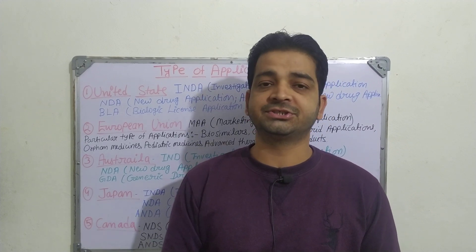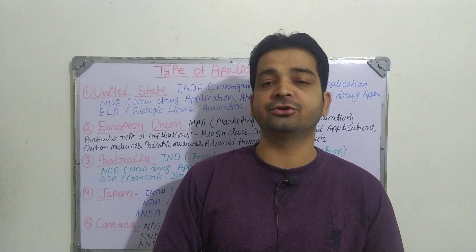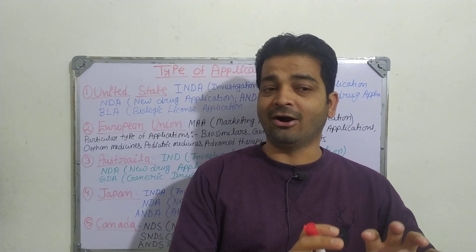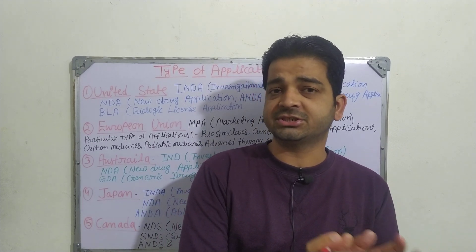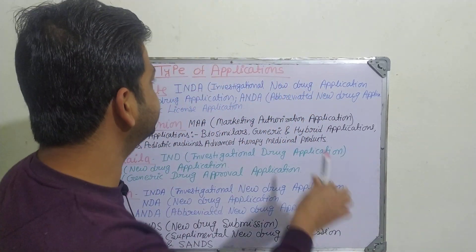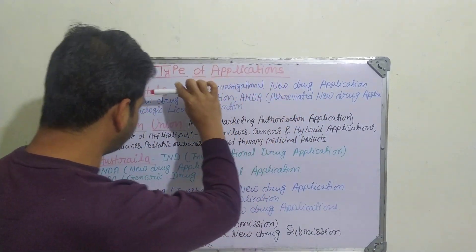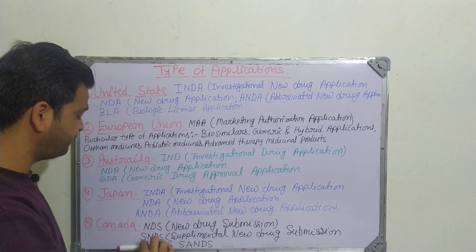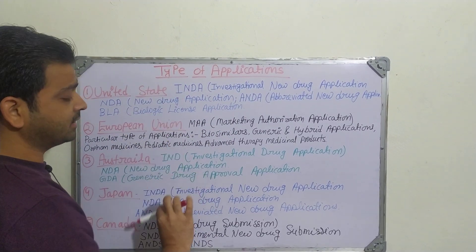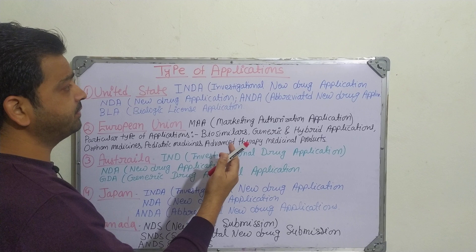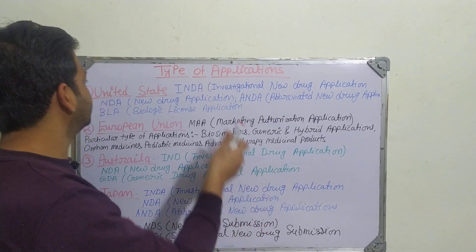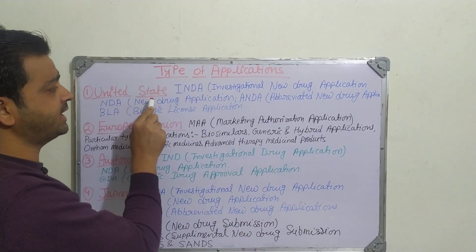Apart from organizational structure, it is given in the syllabus that you need to have knowledge about the organizational structure as well as the type of applications. So the heading is 'Type of Applications.' We are going to discuss the five countries — apart from India — what are the other countries and the types of applications to file for drug approval. The first one is the United States (US).